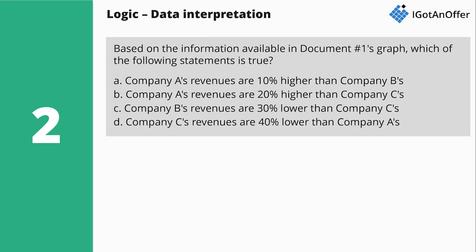Here's an example of a data interpretation question: Based on the information available in document 1's graph, which of the following statements is true? A. Company A's revenues are 10% higher than Company B's. B. Company A's revenues are 20% higher than Company C's. C. Company B's revenues are 30% lower than Company C's. D. Company C's revenues are 40% lower than Company A's.